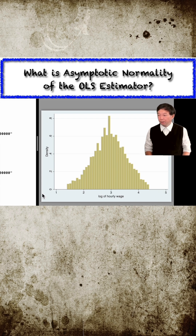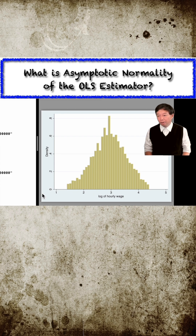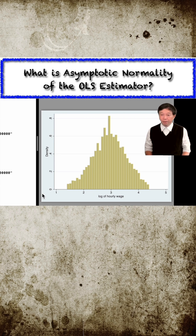Fortunately, we can use wages as the outcome variable in the model and the t-test and the f-test are valid in the large sample inference, according to the asymptotic normality of OLS.